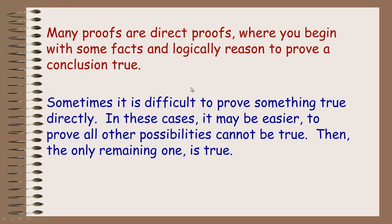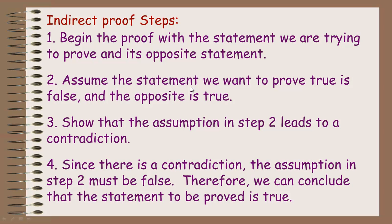In an indirect proof, you begin by listing the statement of what you're trying to prove and its opposite. In the two examples we'll look at, there are only two possibilities — like two things are equal or they're not equal. You then make an assumption: you assume the statement you want to prove true is actually false, meaning the opposite is true. So if you want to prove two things are equal, you start by assuming they're not equal.